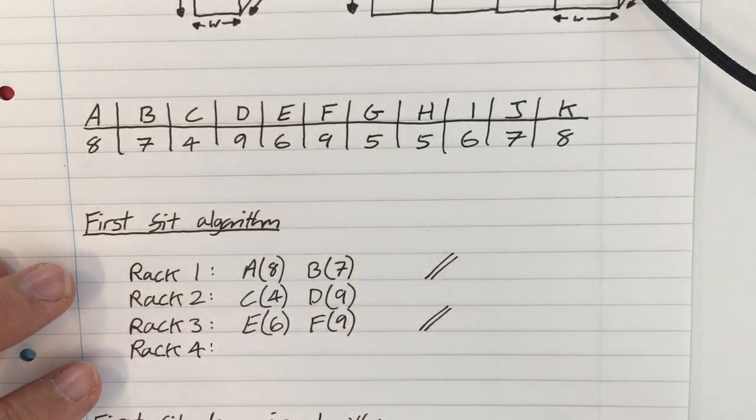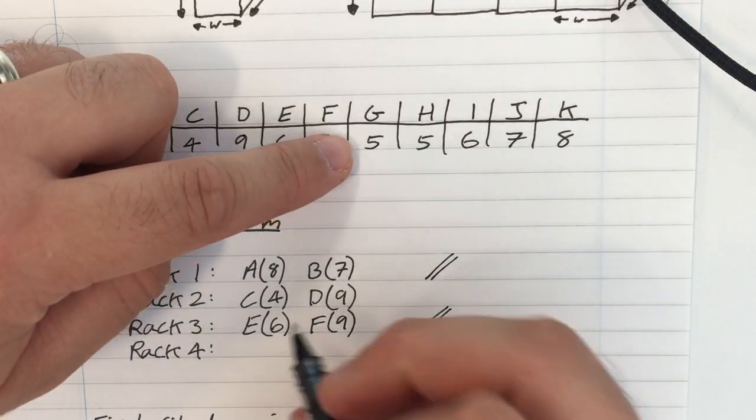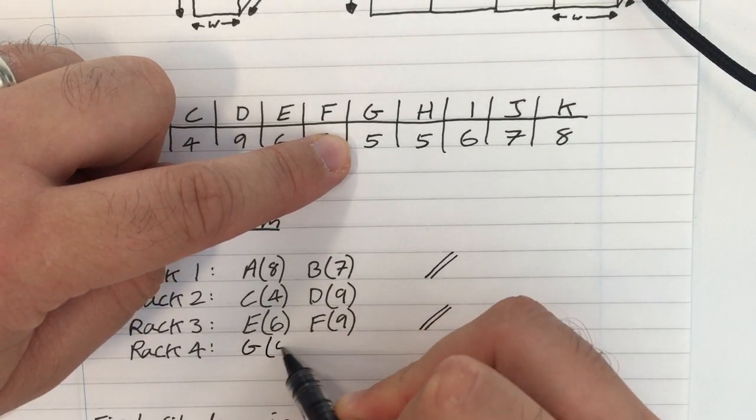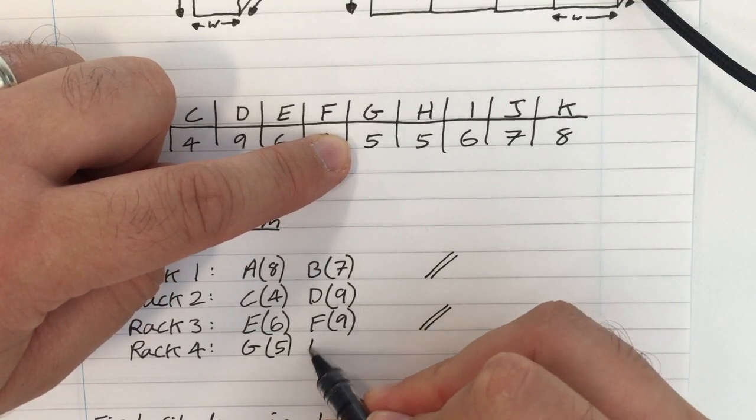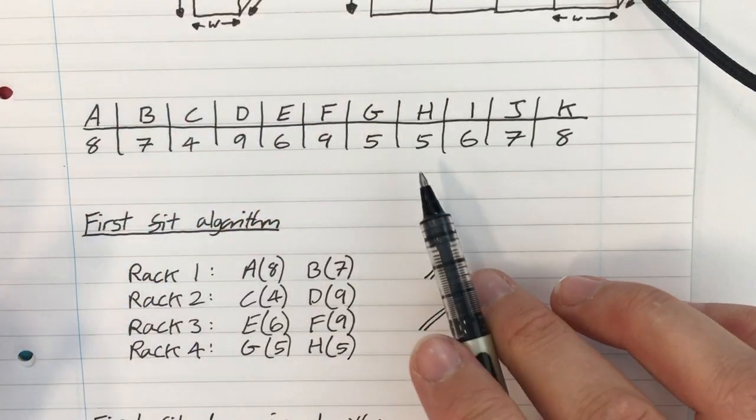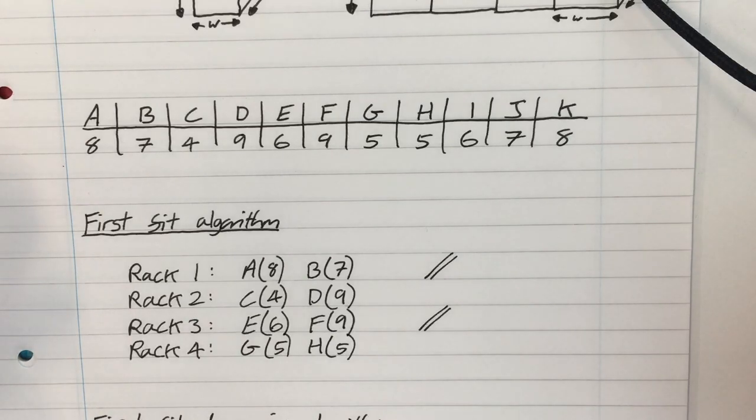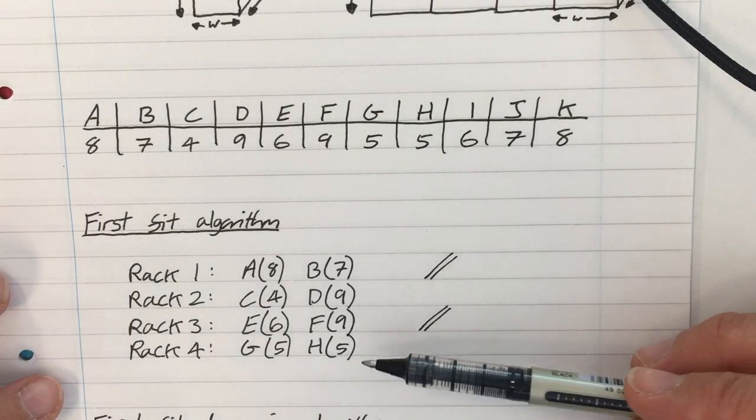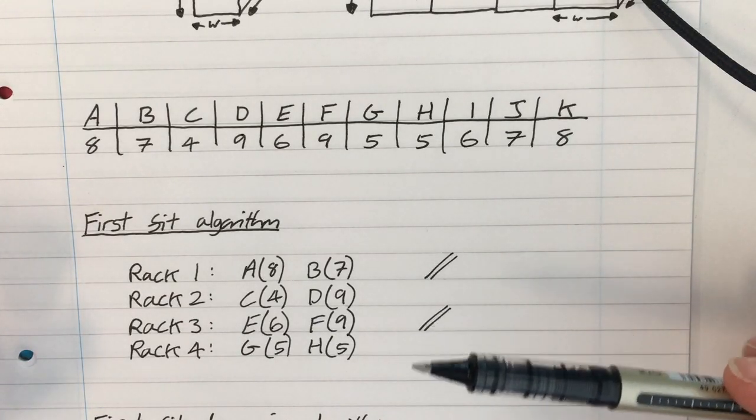There's no formal notation for it, it's just the way I'm laying it out. In rack 4, I'm going to have box G, which is 5, box H, which is 5. And well, I'm not actually going to fit anything else in that rack either, even though there's a space for 5 in there.